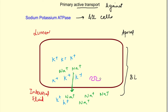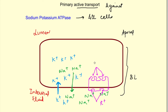This transporter has three binding sites for sodium on its inner aspect. It also transports two potassium ions from outside of the cell to inside, so on the outer aspect there are two binding sites for potassium. Both ions are being transported against their concentration gradient. The transporter also has an ATPase and a binding site for ATP.